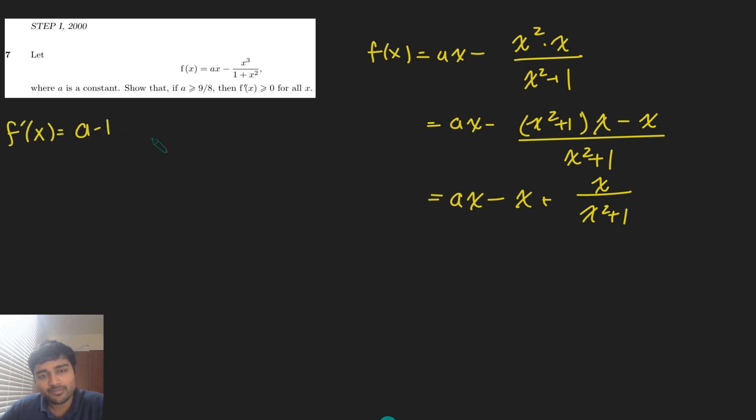So now what's the derivative of f(x)? Well, it's going to be a minus 1 plus, and then I'm just going to use the quotient rule on this guy. So it's going to be x squared plus 1 times 1 minus x times 2x, all over x squared plus 1 squared, which is equal to a minus 1 plus, and if I simplify the top here, I'm going to get minus x squared plus 1 over x squared plus 1 squared, like so.